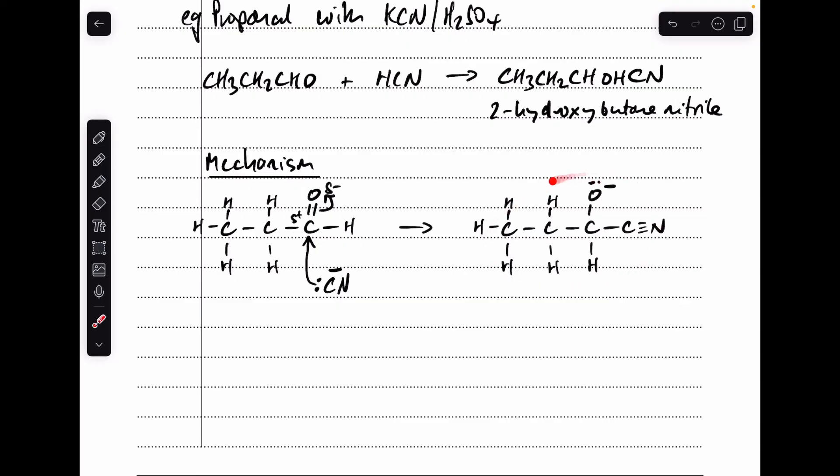So there's the intermediate that's formed as a result of that. There's the carbon-carbon bond that's been formed. And you'll notice I've shown the displayed formula straight away for the CN. And the final thing that happens, the H plus ion from the HCN is going to bond to that O minus. I'll show that with that curly arrow like that, which gives the 2-hydroxybutane nitrile product there.